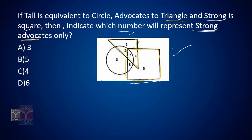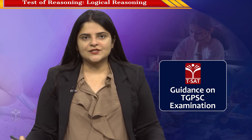Strong is the square and advocates is equivalent to triangle. The overlap of advocates and strong is this area here. When we look at this area, we have two numbers: 4 and 7. But 7 is the overlap of all three figures — circle, square, and triangle. The question is asking strong advocates only, so if we want only two groups, the answer is option C, which is 4.